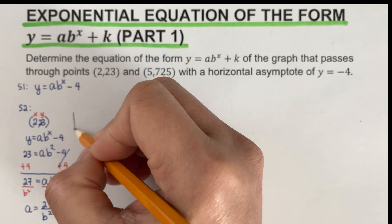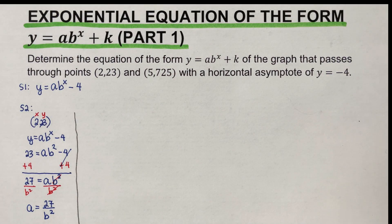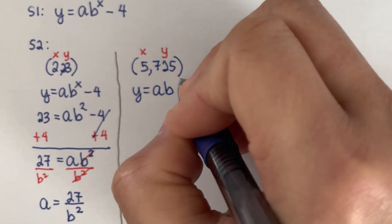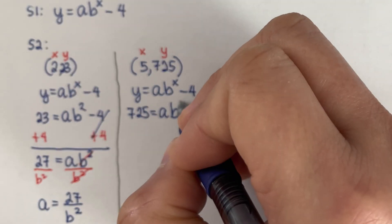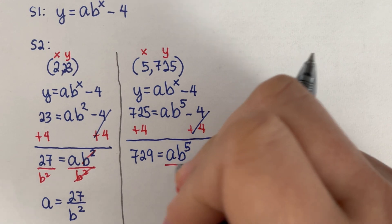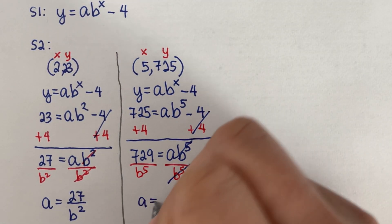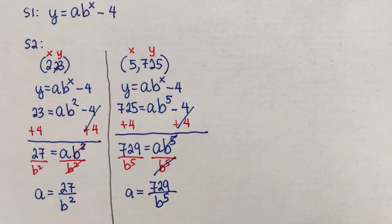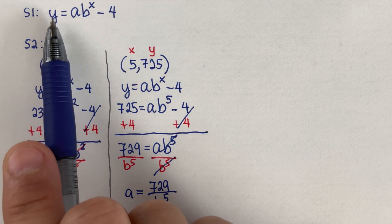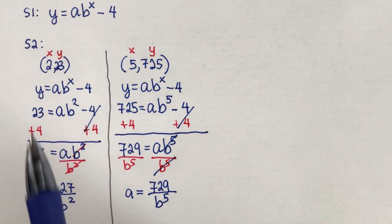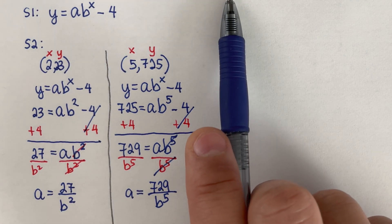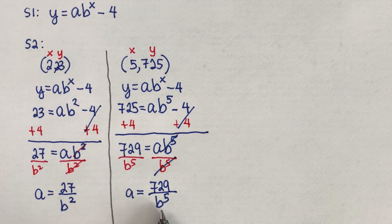We do the same with the second point (5, 725). Plugging into y equals a·b^x minus 4, we get a equals 729 over b to the fifth. Now we're ready to move on to step 3.